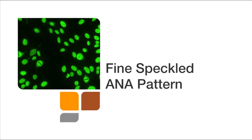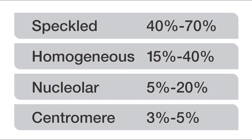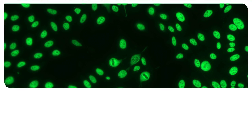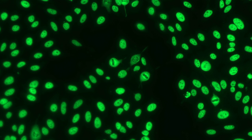The IFA pattern for today is fine speckled. The speckled pattern, both fine and coarse, is the most common ANA-IFA pattern and is seen in about 40 to 70% of IFA positive samples. Now let's take a look and see what a fine speckled ANA-IFA pattern looks like.